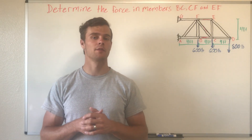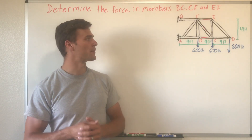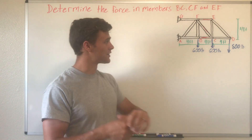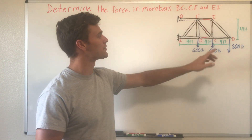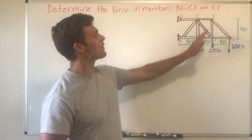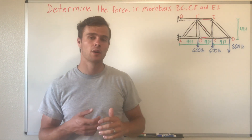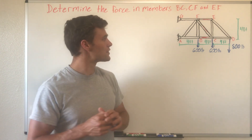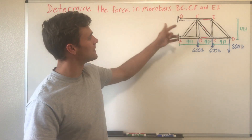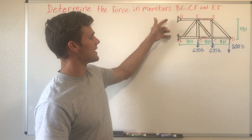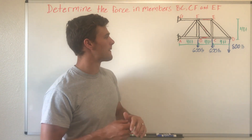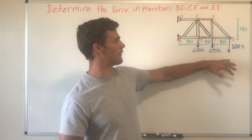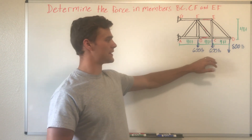Our first step in solving for the internal forces of these members is we need to decide how to cut it. In this case, it's pretty easy because you can just cut down the middle of the truss and cut through those three members. The next thing you want to decide is which side of the truss you're going to keep. If we keep this side, we need to solve for the reaction forces at these two connections, and we would need to do that before we cut the truss so that we can have all of the loads applied.